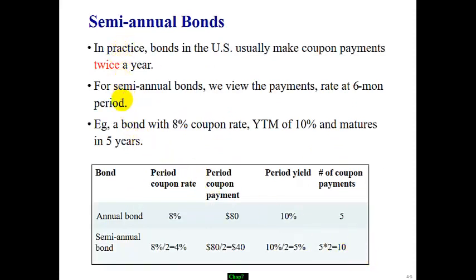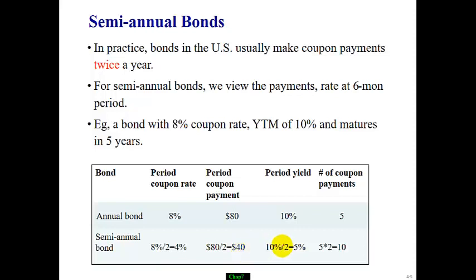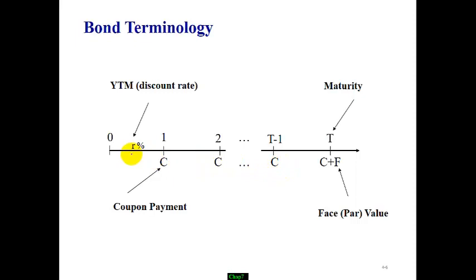Let's take a look at how cash flows and rates differ between semi-annual and annual bonds. For the same 8% coupon rate, YTM 10%, and 5-year maturity: for an annual bond, the annual coupon payment is $80, YTM is 10%, and there are 5 coupon payments. For a semi-annual bond, everything is now in six-month terms — the coupon rate for six months is 4%, implying a coupon payment of $40 every six months, the six-month rate is 5%, and the total number of coupon payments doubles to 10.